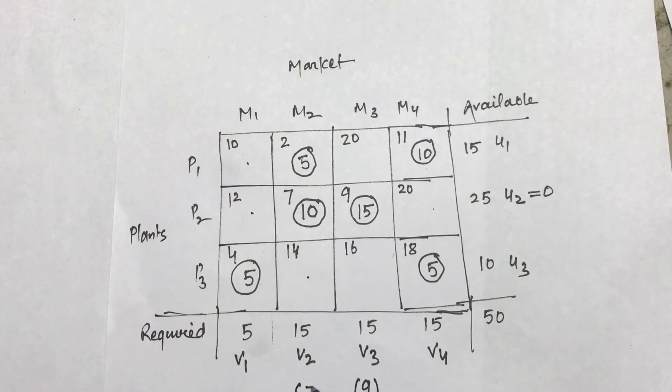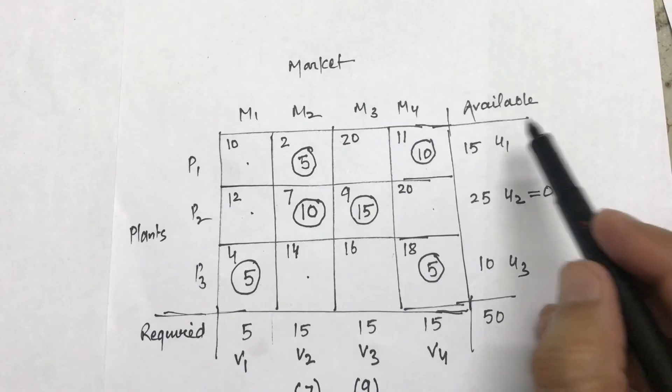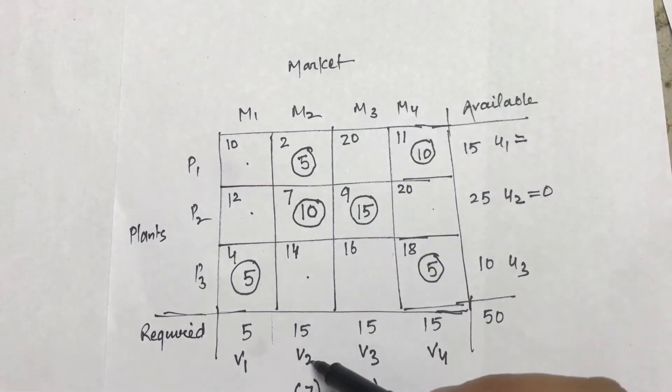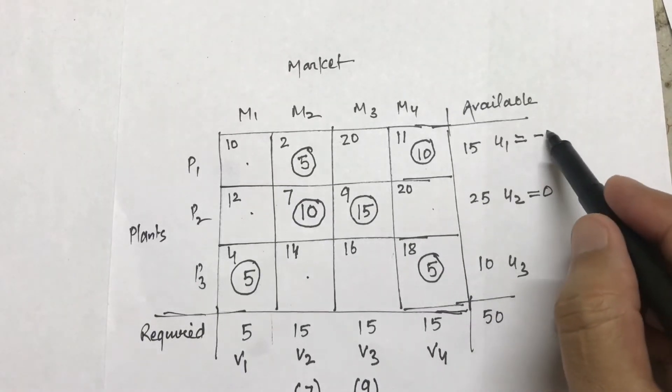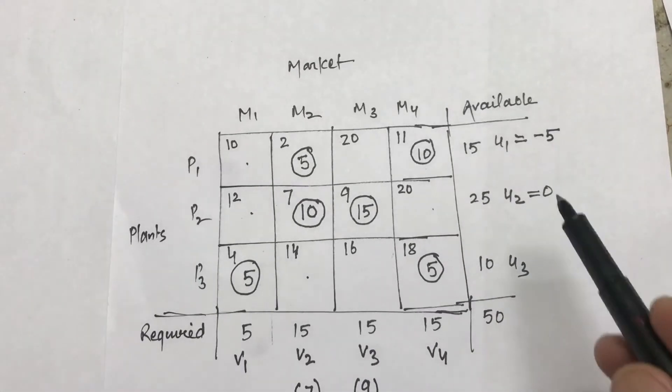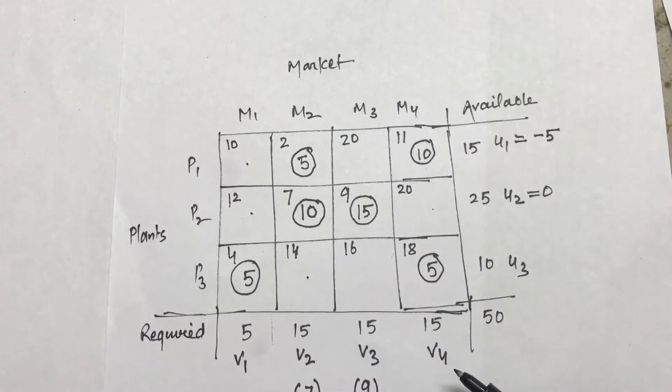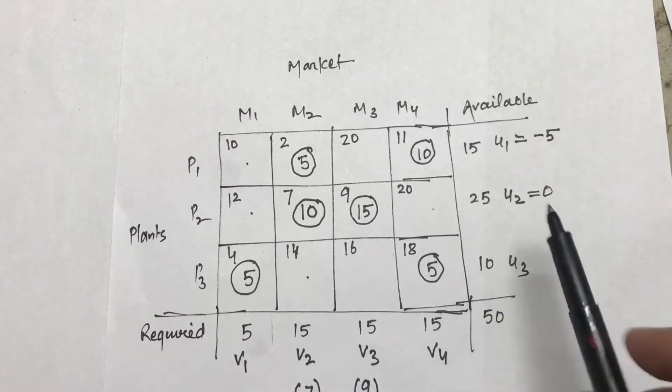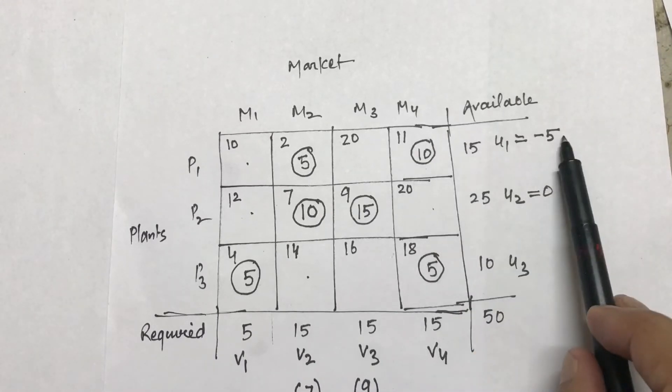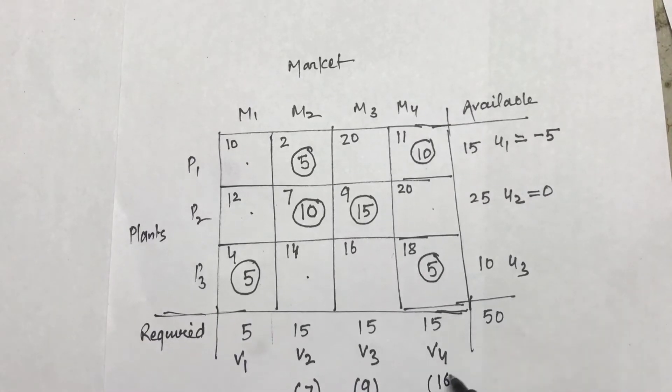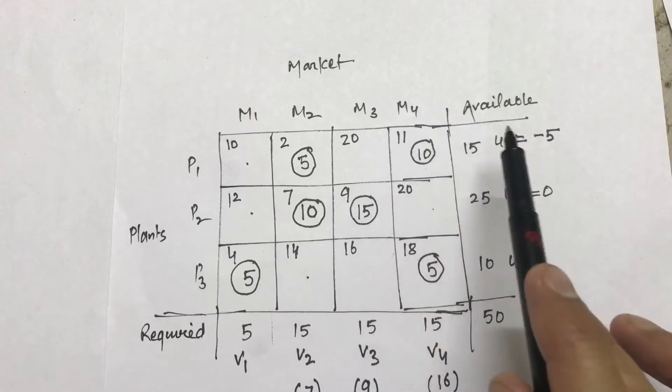Then I can calculate u1 from here by using u1 plus v2 is equal to 2. So I already know the value of v2, so u1 is going to come to be minus 5. And similarly v4 I can calculate right from here. You can easily calculate: 11 and here is minus 5, so this value is going to come out to be 16, because u1 plus v4 is equal to 11, so u1 is minus 5.